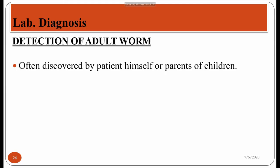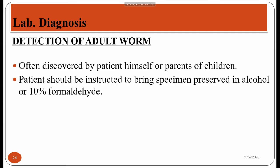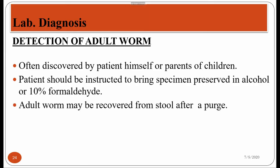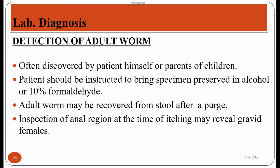Adult male worms cannot be seen in perianal regions because the male worm dies immediately after fertilizing the female. The patient or infected person should be instructed to bring the specimen preserved in alcohol or 10% formaldehyde. The stool specimen should be collected in a universal container that is leak-proof, sterile, and grease-proof. If there is any delay in sending the specimen to the lab, it must be preserved in alcohol or 10% formaldehyde. During purging of stool, adult worms can be seen in the stool specimen.